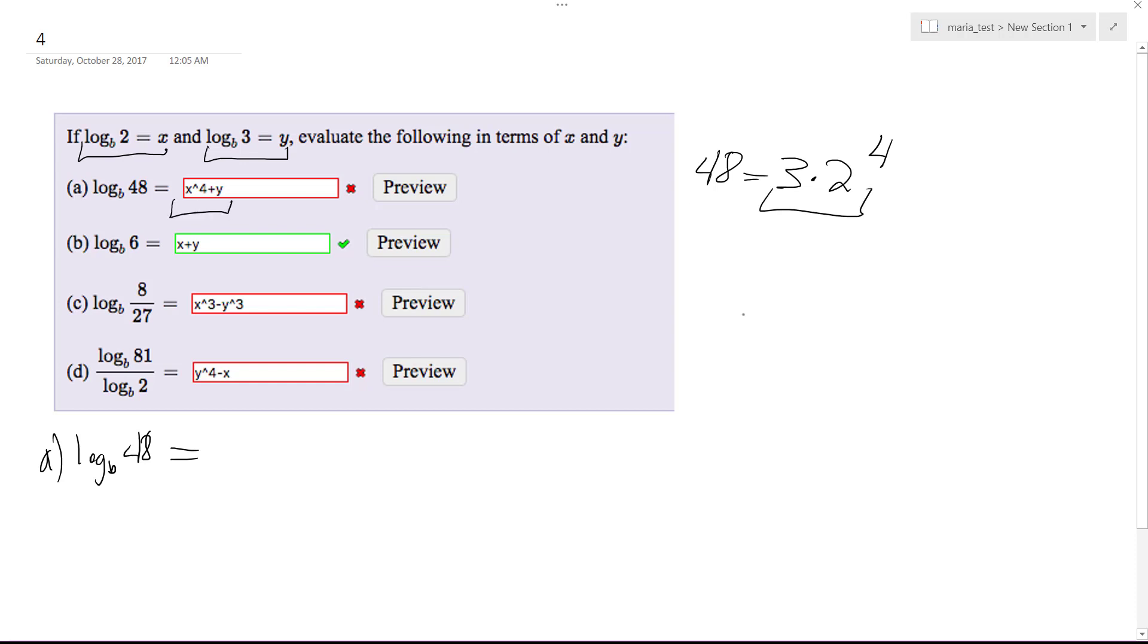What happened here is I didn't represent it right so it's actually got to be 4 log base b of 2 plus log base b of 3 which would be equal to 4x plus y. This alone represents the subtraction of x and then just add y. So this is the same thing as 2 raised to the 4th, which is 16 times 3 which is 48.